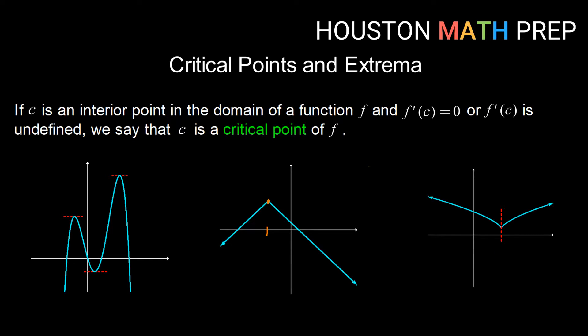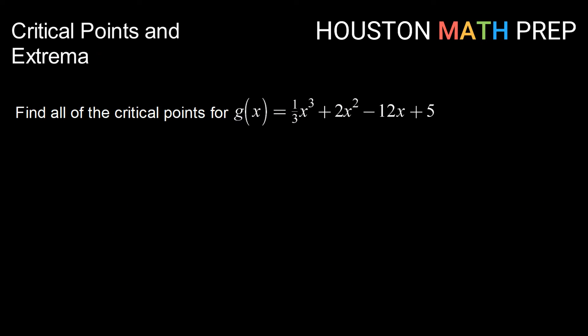So let's take a look at finding these values. If we have the function g of x equals one-third x cubed plus 2x squared minus 12x plus 5,